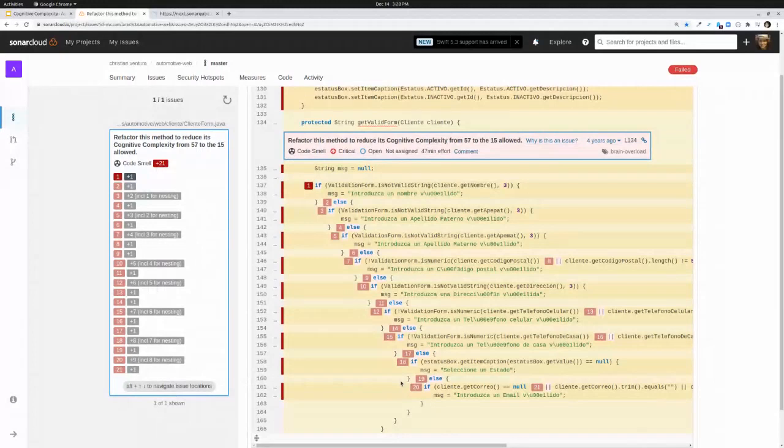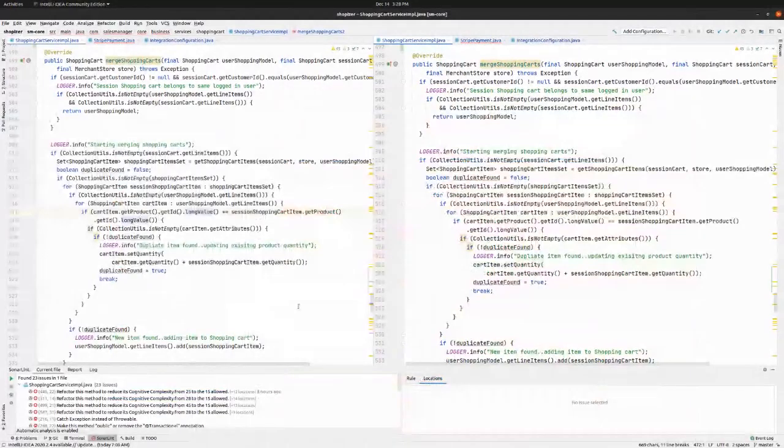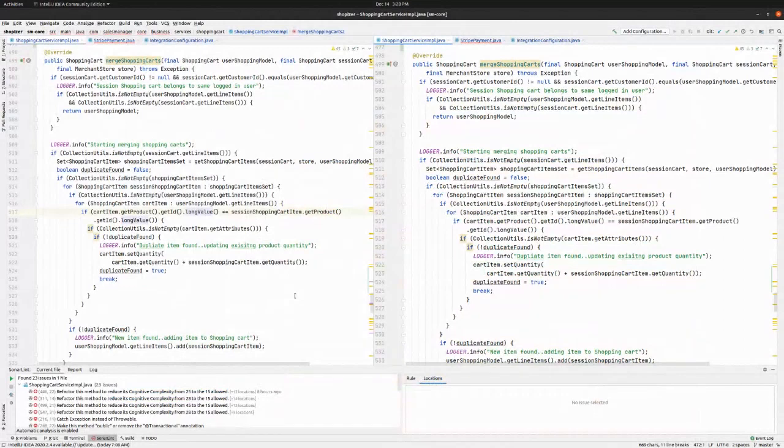So now I'm going to jump into the IDE and look at some cognitive complexity issues in some existing code. Just for background, I'm in IntelliJ IDEA. And here at the bottom, I've got my SonarLint pane open. SonarLint is one of the three products offered by SonarSource. SonarLint is a free IDE plugin. It's available for IntelliJ IDEA, Eclipse, Visual Studio and VS Code. You can get these from your plugin centers or extension centers. Just plug it in and go. It's free to use always.